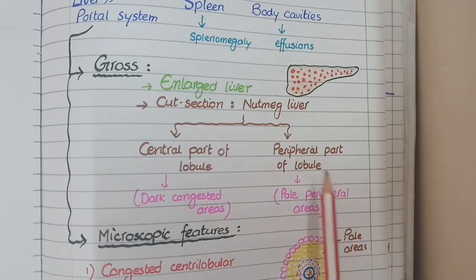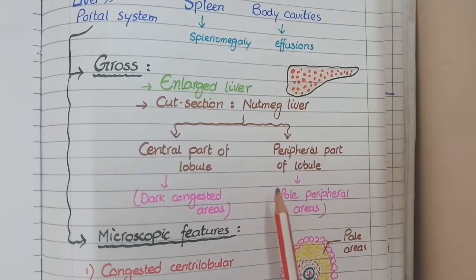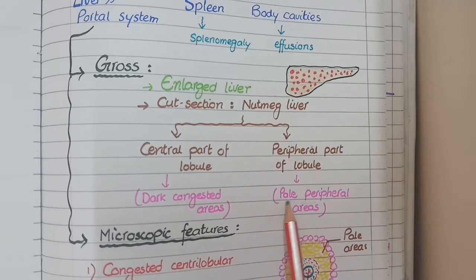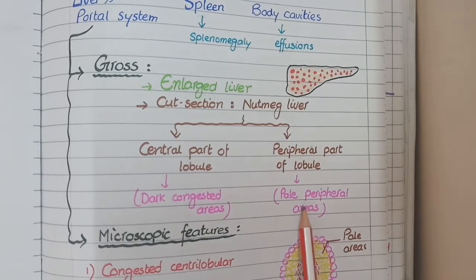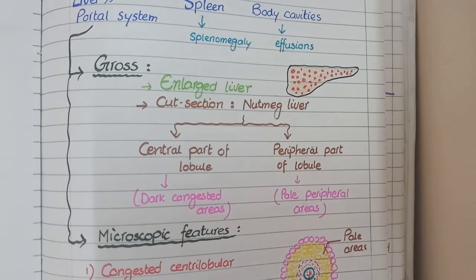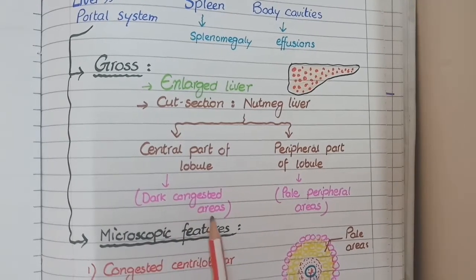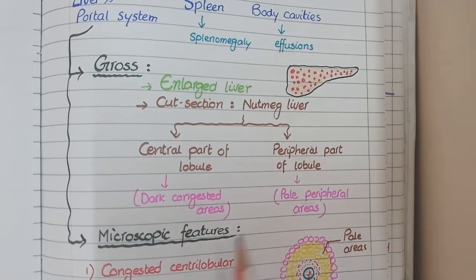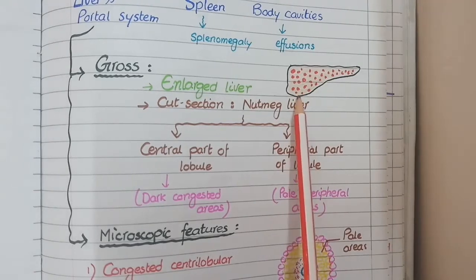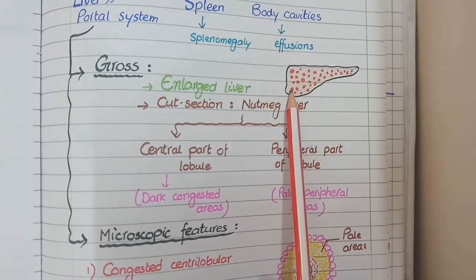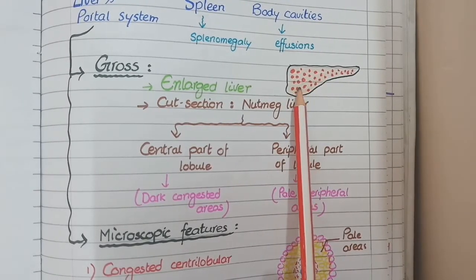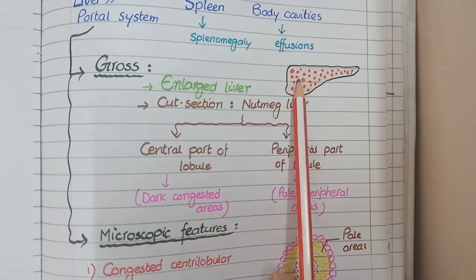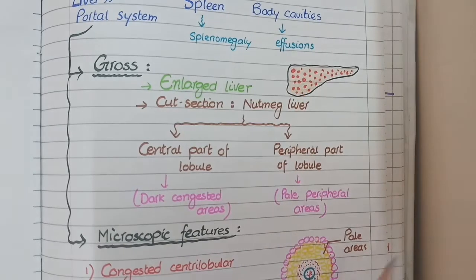The part of the lobule away from the central vein does not look congested — instead it looks normal or slightly paler. Imagine there are hundreds of lobules in the liver, and each lobule has a central red congested area surrounded by a peripheral pale area. As you can see in the diagram, there is a speckled appearance because the red dots are the congested parts of the lobules and the brown-colored parts are the non-congested areas, and together these alternating congested and non-congested areas give us the speckled appearance we call nutmeg liver.